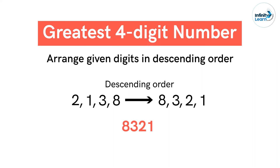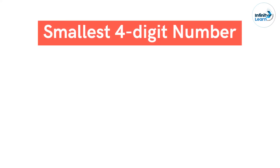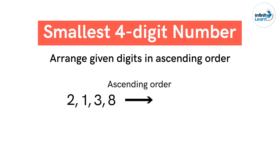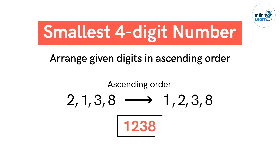Just as you formed the greatest number from the given four digits, can you guess how we form the smallest four-digit number? Correct! We can form the smallest four-digit number by arranging the digits in ascending order. The ascending order for digits 2, 1, 3, 8 will be 1, 2, 3, 8. So the smallest four-digit number possible is 1238.